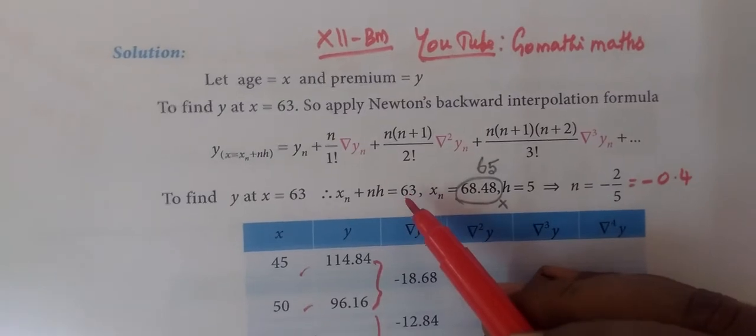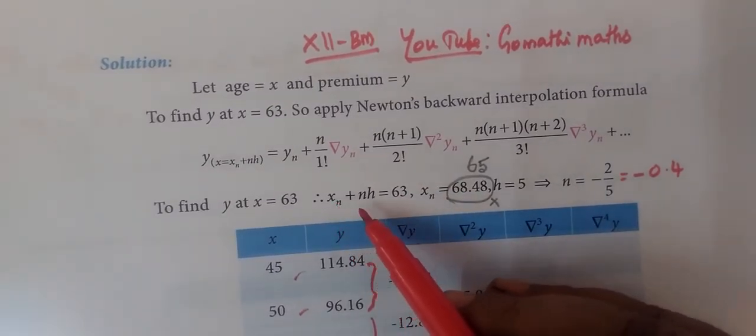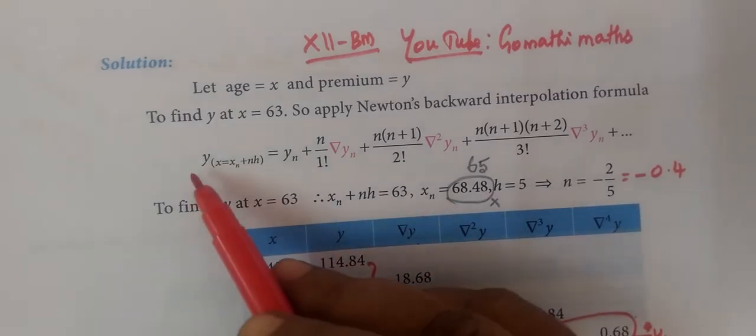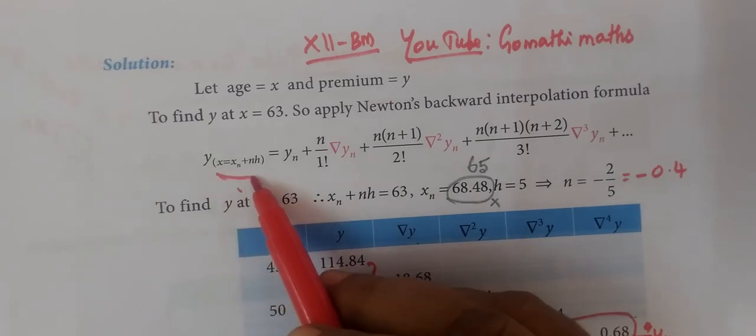And you have to find n. In n, there is xn plus nh equals x. This formula is x equals xn plus nh.